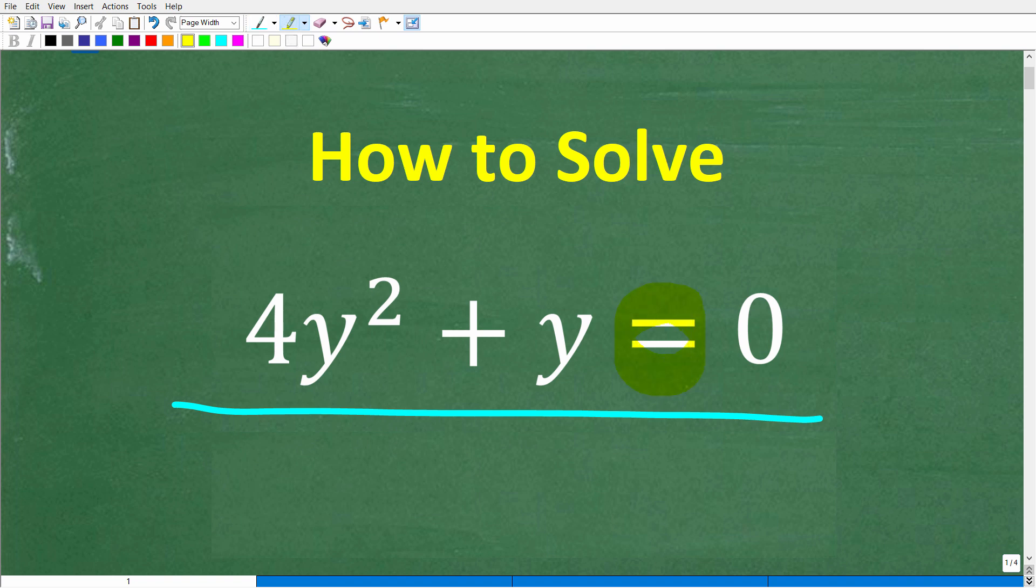Now, the first thing that we need to notice is that we do have an equation, so we have 4y squared plus y is equal to zero, and we're trying to solve this equation for y.